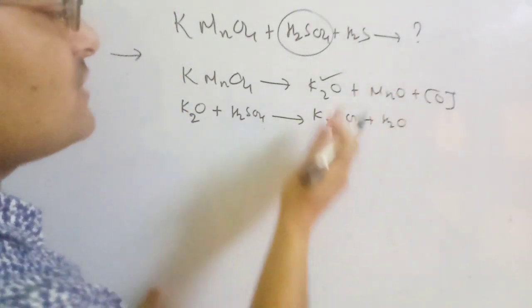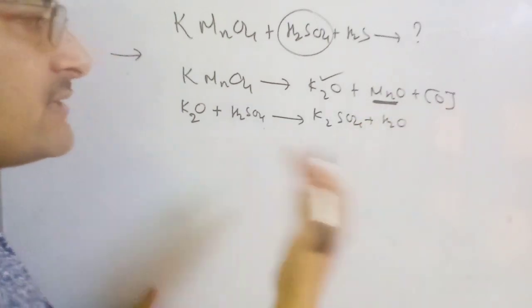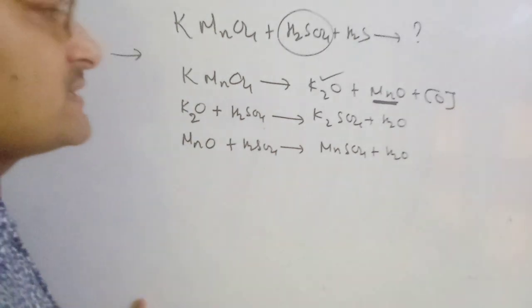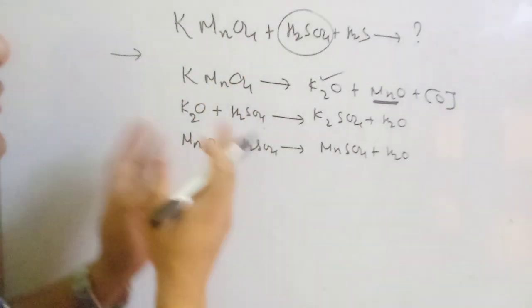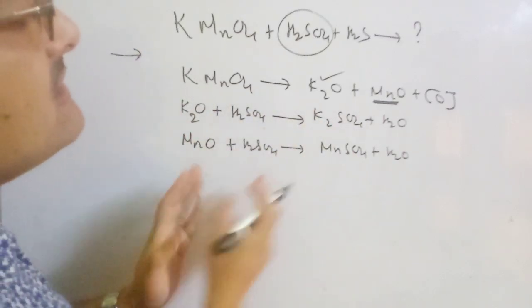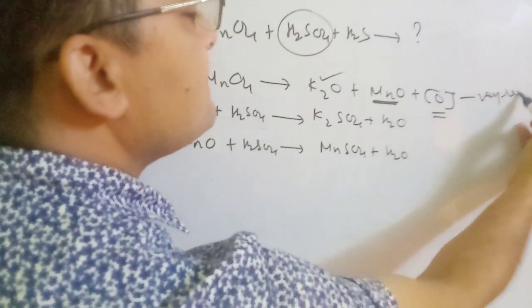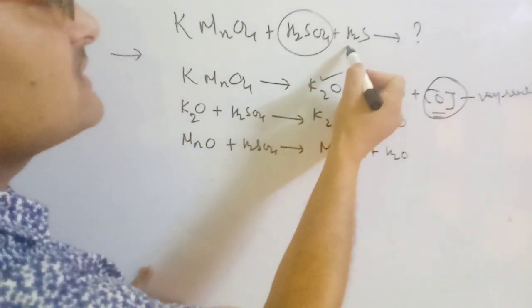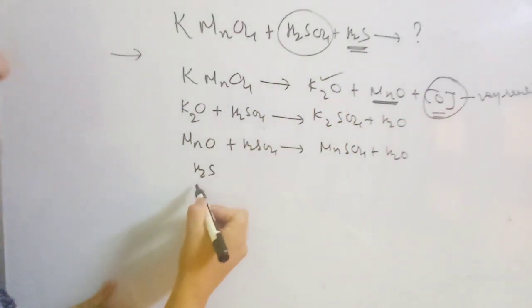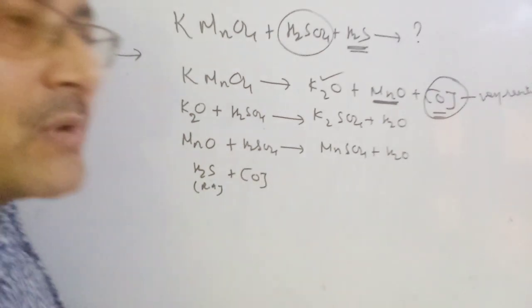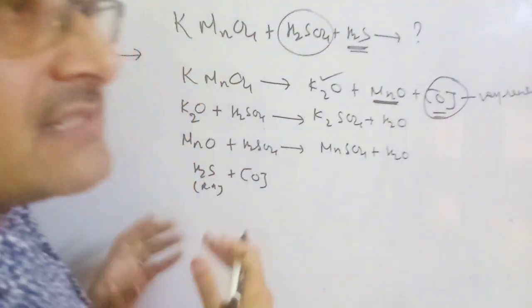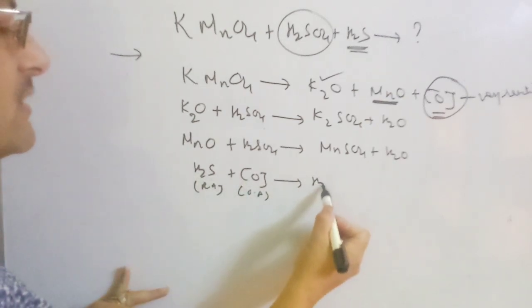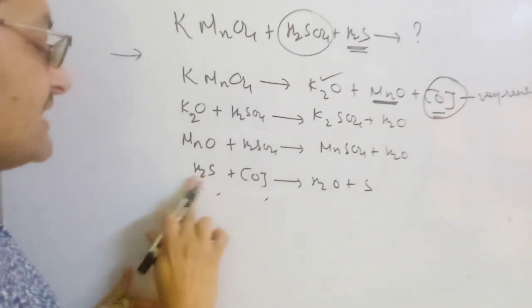These are the second and third partial equation steps. Now for nascent oxygen — nascent oxygen is very reactive. This very reactive nascent oxygen produced from KMnO₄ reacts with the remaining reactant H₂S. H₂S is a reducing agent and nascent oxygen is an oxidizing agent. When reducing agent meets oxidizing agent they react, and H₂S with oxygen gives water and sulfur as products.